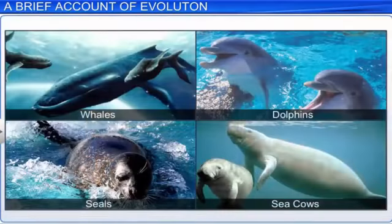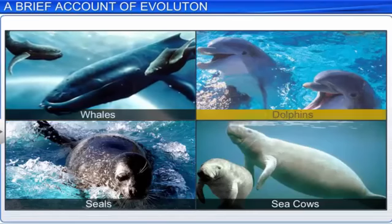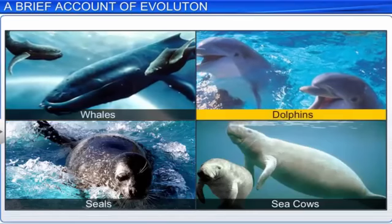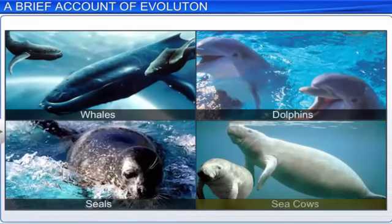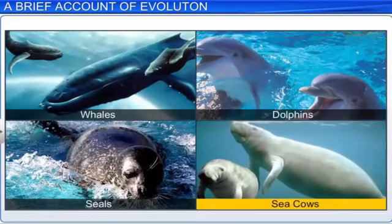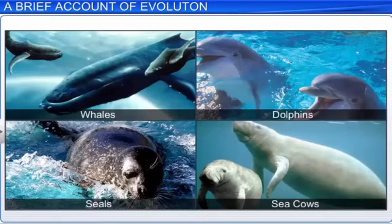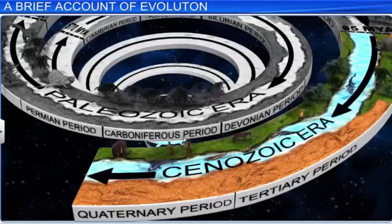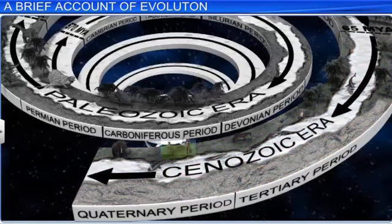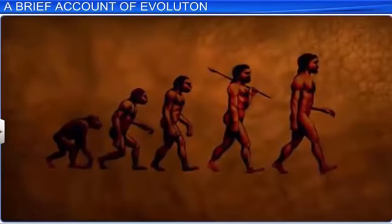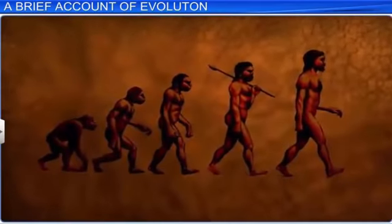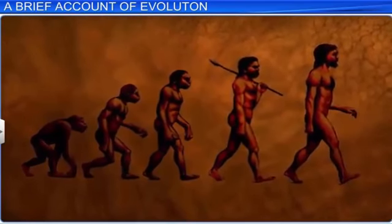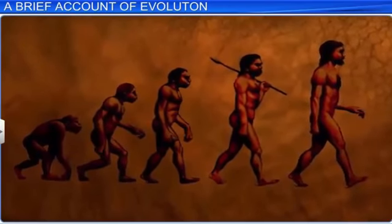Meanwhile, there were mammals which evolved in water, such as whales, dolphins, seals, and sea cows. However, the most successful evolution story was that of human beings, as they developed language skills and self-consciousness as well.